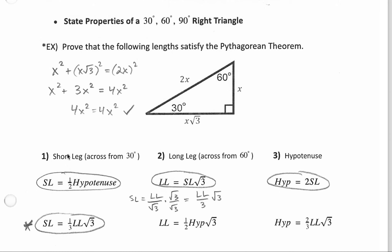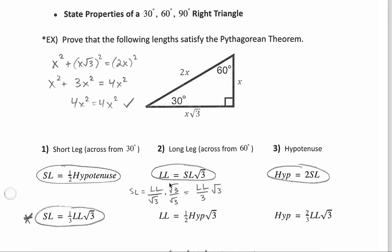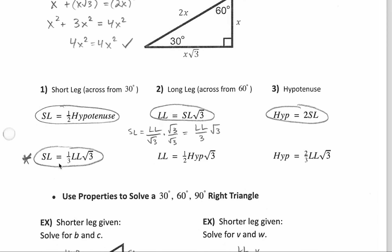So these three formulas are the result. One side is called your short leg — that's across from the 30-degree angle. The other side across from the 60-degree angle is your longer leg, and across from the 90-degree angle is always your hypotenuse. The short side is going to be half the hypotenuse, or the hypotenuse is double the short leg. If we know the short leg value and multiply by the square root of 3, we get the long leg. There are different algebraic forms of these formulas, but the top three are the most commonly needed.